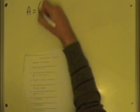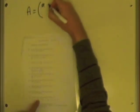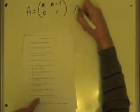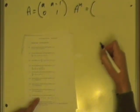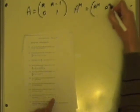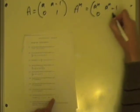If you have a matrix A, which is equal to A, A-1, 0, 1, then A to the N would equal A to the N, A to the N-1, 0, 1.